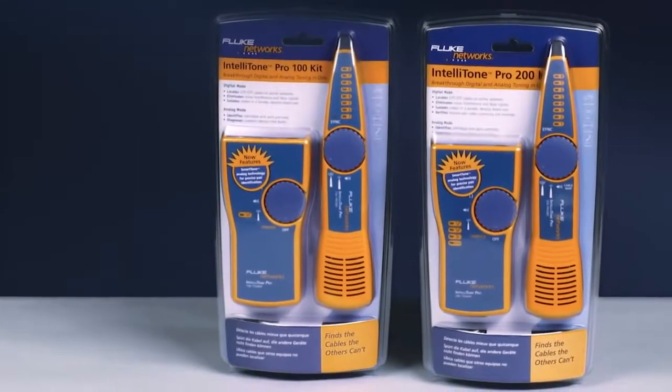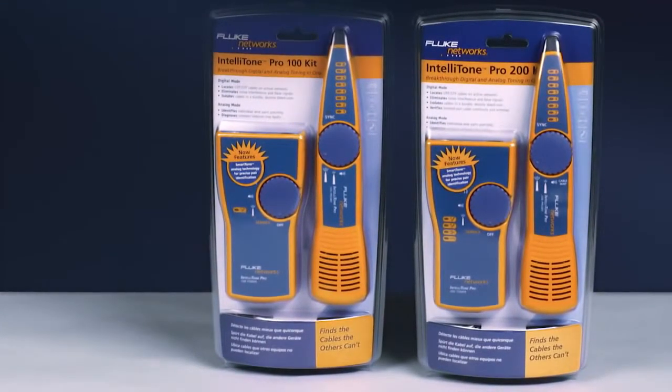Find cables the others can't. Get the IntelliTone Pro from Fluke Networks. There are two different models to choose from. The IntelliTone Pro 100, designed for single-line telco applications, and the 200, used for two-line applications, and includes a jack on the probe for wire mapping.